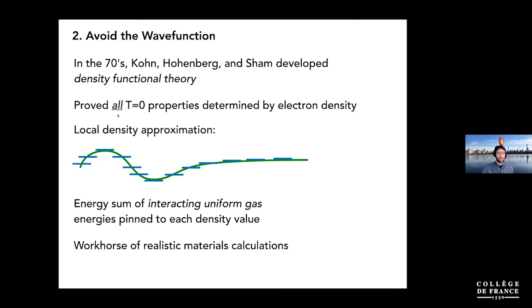Starting from this viewpoint, you can solve systems that are uniform and patch them together in what's called the local density approximation, understanding many-electron systems as local patches of uniform gases that are each interacting. This can be applied to very big, very realistic systems and is still a workhorse today. But the problem is you put in this approximation and it's hard to refine or remove it afterward — you're a bit stuck with it.